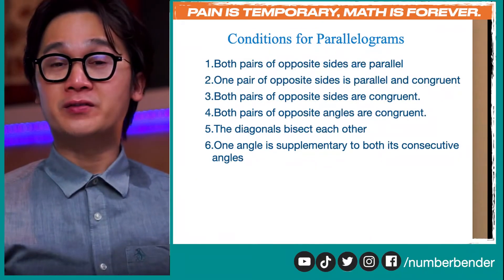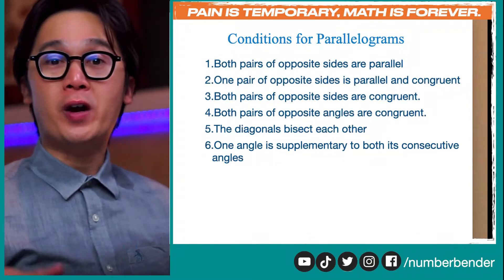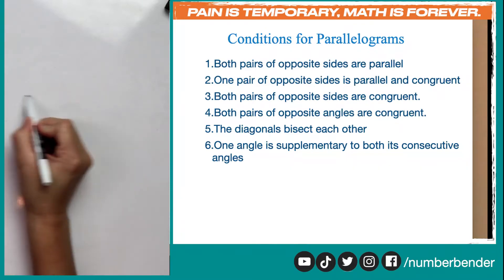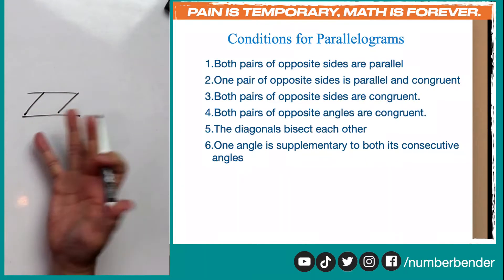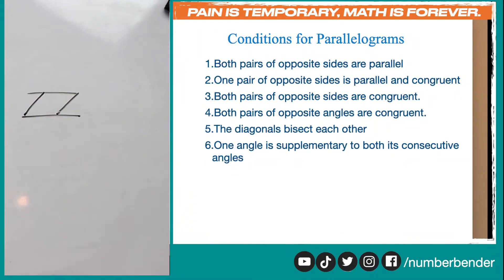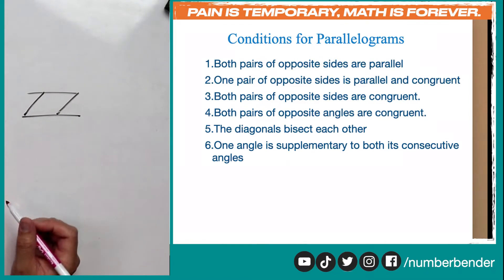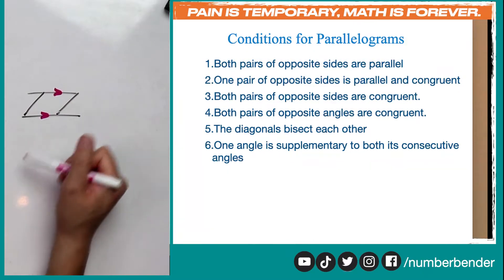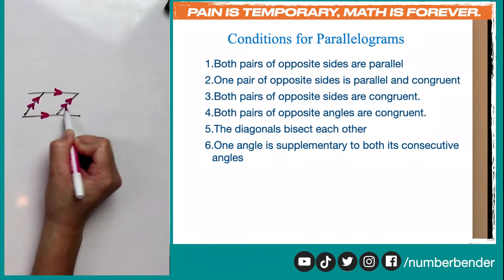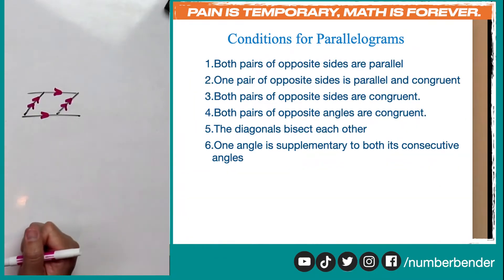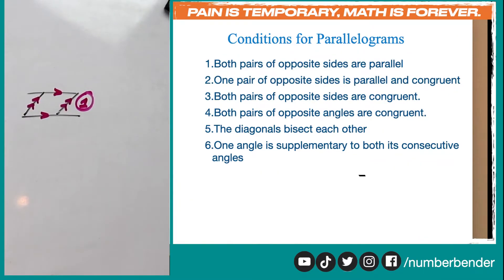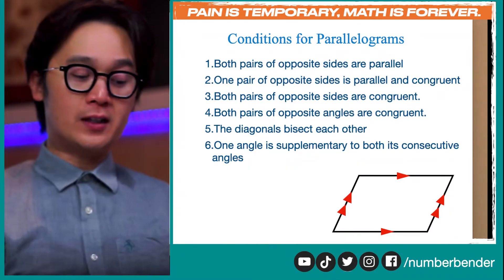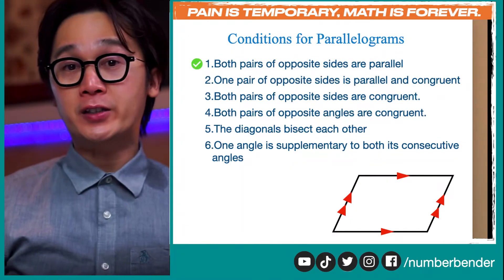Condition one: both pairs of opposite sides are parallel. In symbol form, let's say I have a quadrilateral — not yet a parallelogram — but if I put a symbol here that satisfies condition number one, both pairs of opposite sides are parallel. So this side and its opposite side should have the same arrow symbol denoting they are parallel, and the other pair also gets that symbol. This is condition number one — if the opposite sides are considered to be parallel, then we know that condition number one is satisfied and this is considered to be a parallelogram.